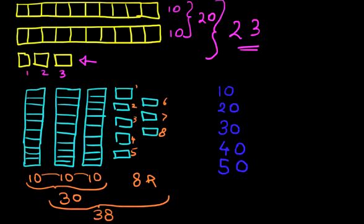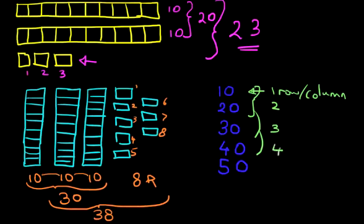So the first one, if we've got 1 row or column of 10, it is 10. That's 1 row or column. If we've got 2 of them, then it becomes 20. If there are 3 rows, it becomes 30. If there are 4 rows, it becomes 40. And 5 rows or columns, it becomes 50.